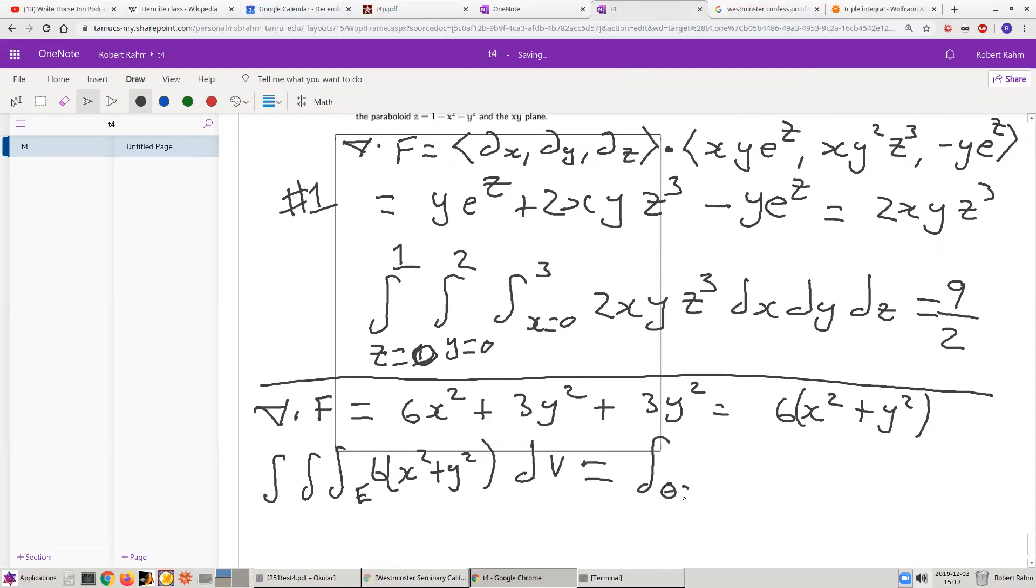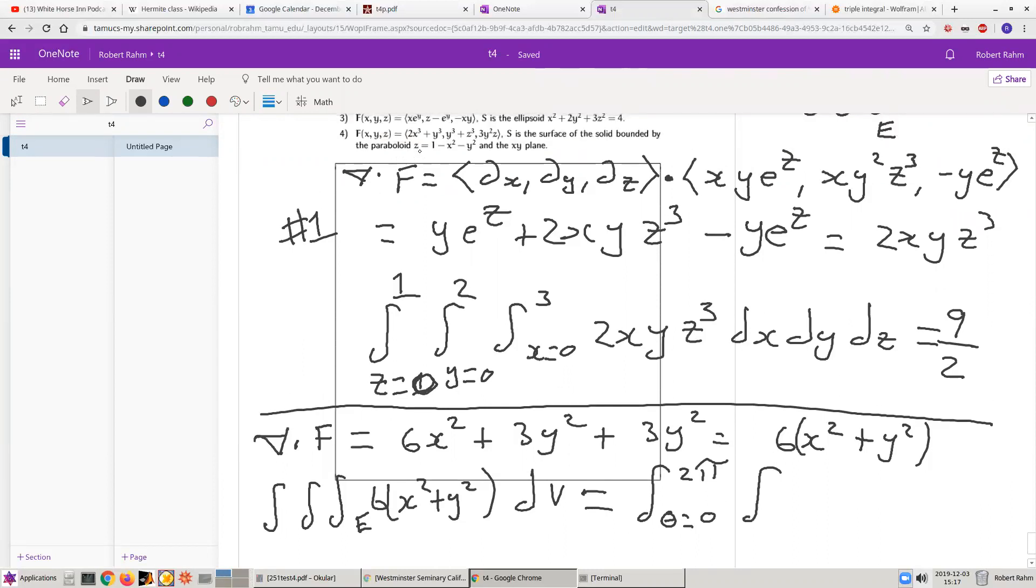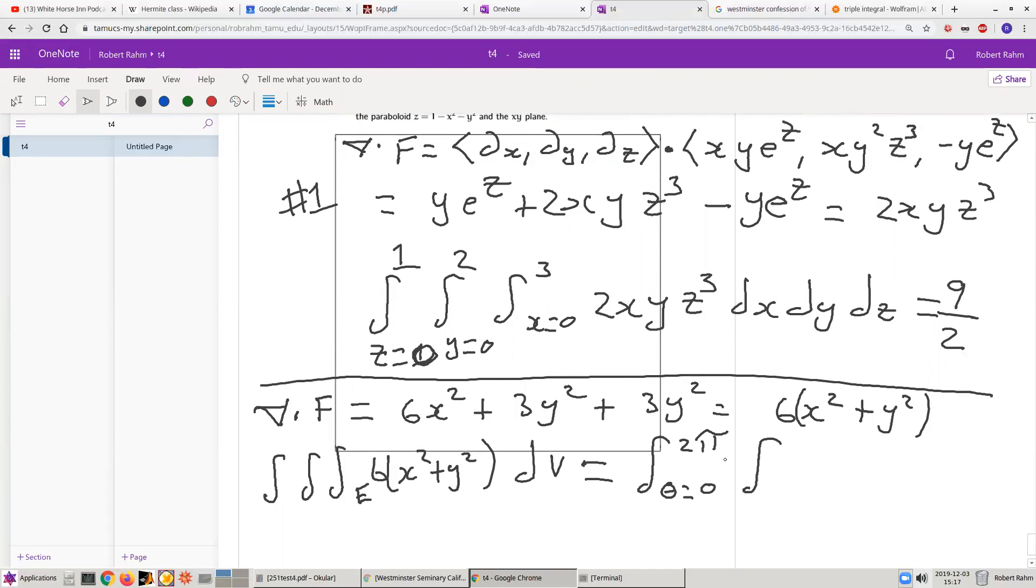So theta will go from 0 to 2 pi. R goes from 0 to 1. Because when you're in the xy plane, in other words, when z is equal to 0, this becomes 0 equals 1 minus x squared minus y squared. So that means r goes from 0 to 1.